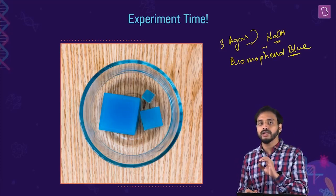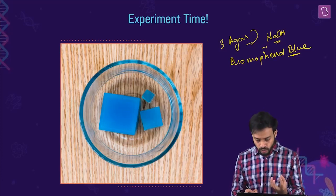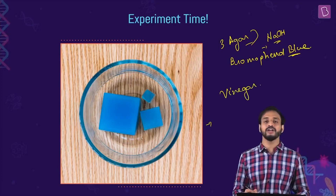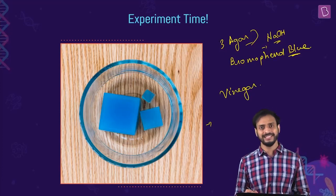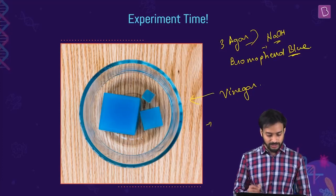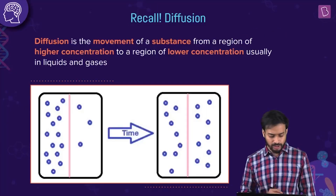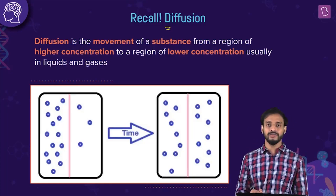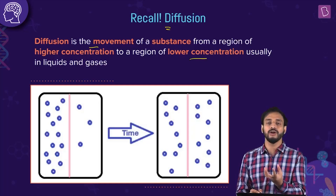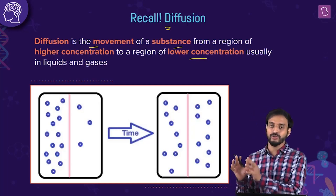Bromophenol blue changes color in acidic conditions. Now these cubes will be inserted into a container with vinegar. Vinegar is an acid — not a very strong acid, but a weak acid. Before observing the results, let's revise diffusion: it is the movement of a substance from a region of higher concentration to a region of lower concentration, and it occurs with liquids and gases.